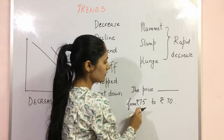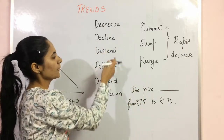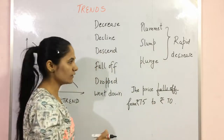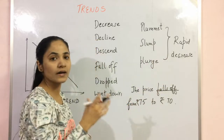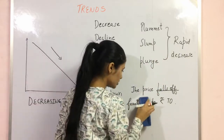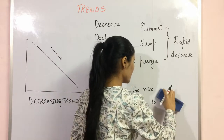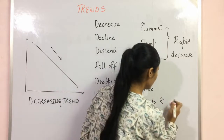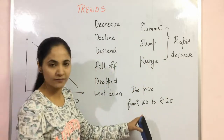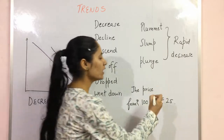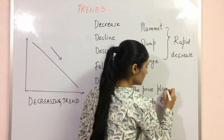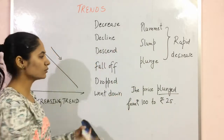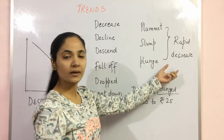For example, 'The price falls off from 75 to 70.' Now, if I want to show a rapid decrease — say from 100 to 25 — that is a huge difference, so I would write: 'The price plunged from 100 to 25.' For a moderate decrease, use the general words; for a rapid decrease, use plummet, slump, or plunge.